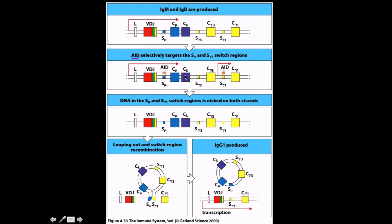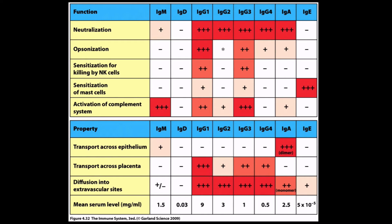APE, a nuclease, cuts out the CG sequences that were converted after AID's action. The nicks provide flexibility, allowing the formation of looping structures at the switch region. This recombination produces, in this example, IgG1, because the gamma-1 constant region is the only one remaining — everything else is cut out. If a different point were cut, leaving only the gamma-3 constant region, we'd get IgG3, and so on.